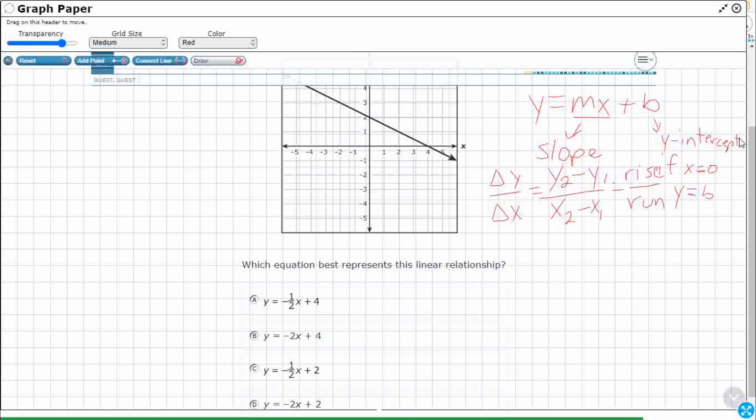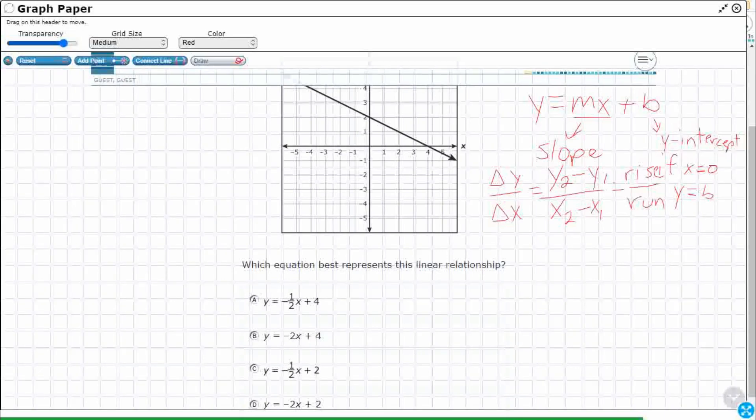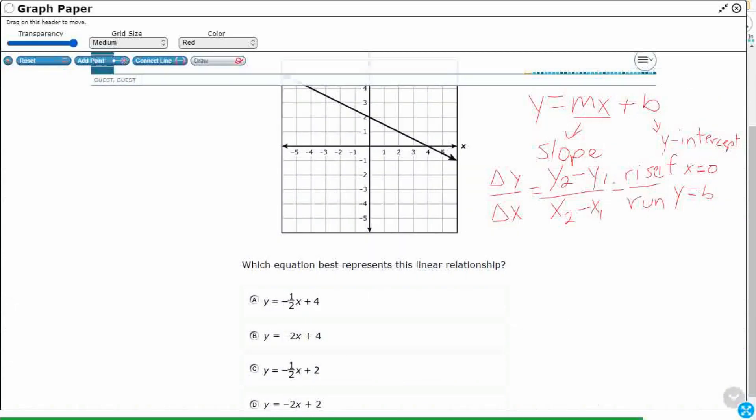So first we can start with this y-intercept. Pretty simple. Because look at it right here. It crosses, the line crosses the y-axis at positive 2, which means our b is going to equal positive 2. So that's visually very easy to see. And so I can immediately cross out a and b because they had it as positive 4. That's actually where it crosses the x-axis. So sometimes that's a mistake we'll make is we'll look at where it crosses the x-axis. We want to see where it crosses the y-axis. It's called the y-intercept.